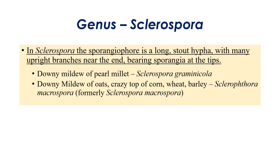The next genus is Sclerospora. In Cricketal classification it comes under Sclerosporales, but at present it is classified under Peronosporales. I will explain it in detail in Sclerosporales as well. Sclerospora is characterized by long, stout, upright branches near the end. Examples: pearl millet downy mildew — Sclerospora graminicola; crazy top of corn, wheat, and barley — Sclerospora macrospora (previously called by the same name).